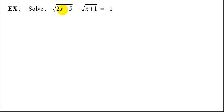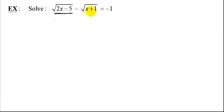So how do we solve a two-radical equation? We need to isolate one radical on one side and then square both sides. For this example, it will be easier to isolate this term on the left-hand side, since all we have to do is add the square root of x plus 1 to both sides.